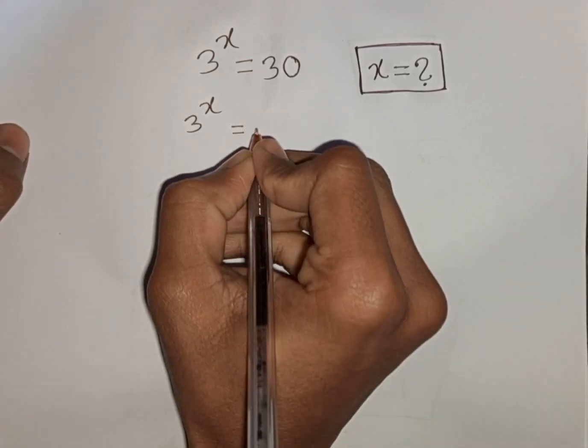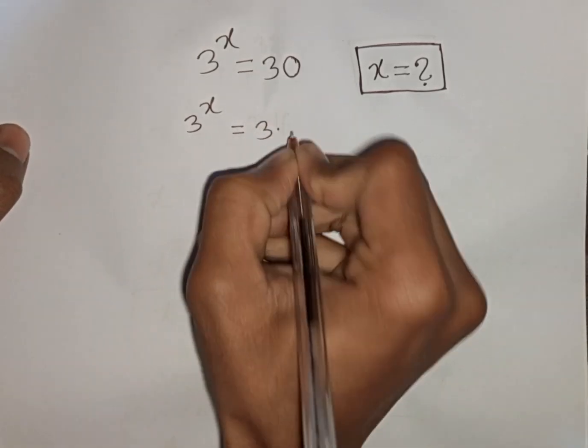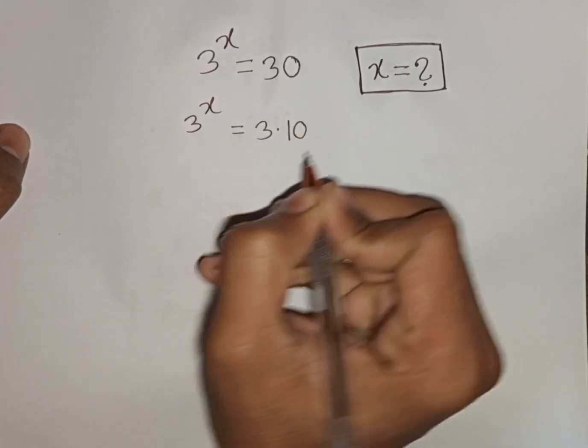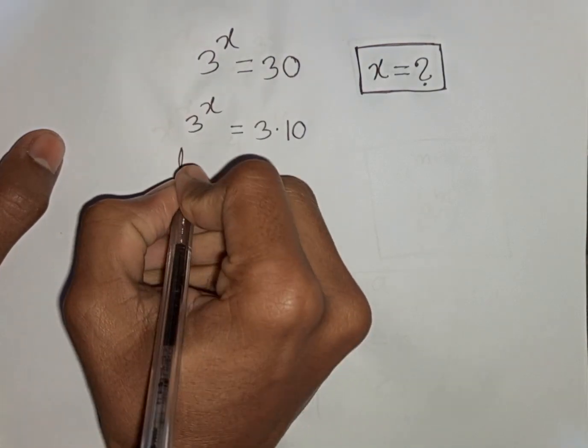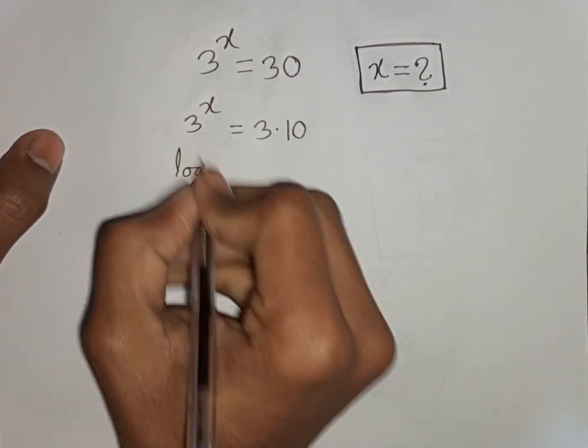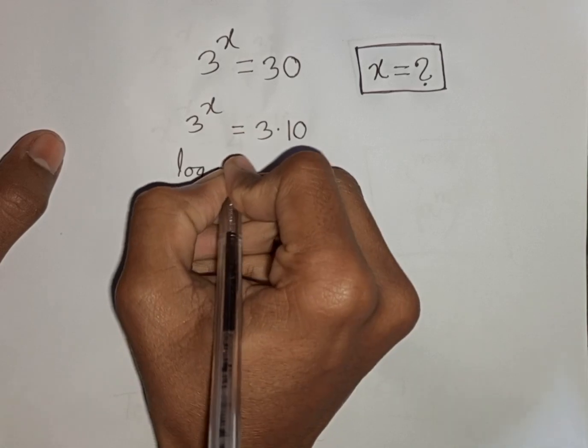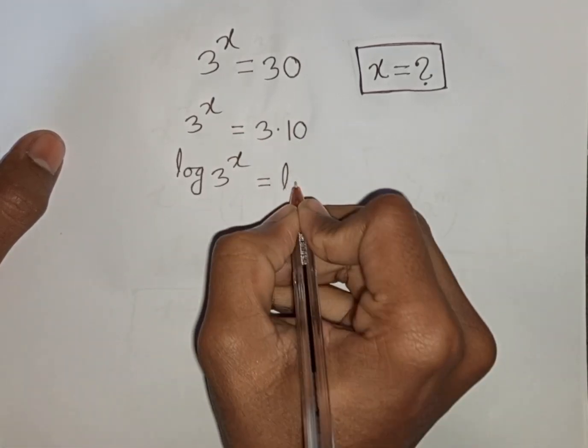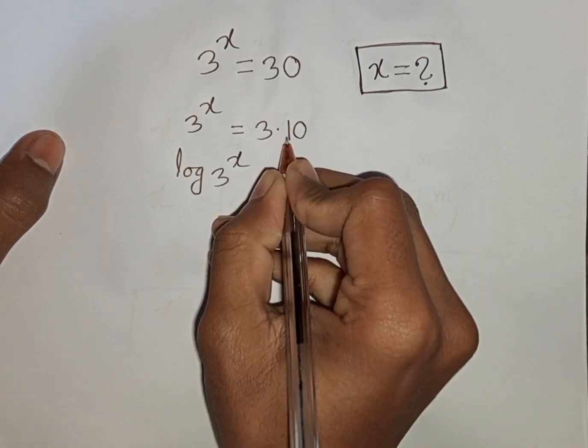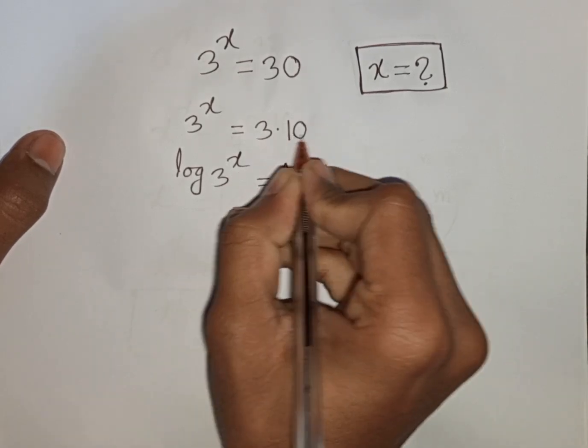30 can be written as 3 times 10. Now I take log on both sides, so you can write here log of 3 power x is equal to log of 3 times 10.